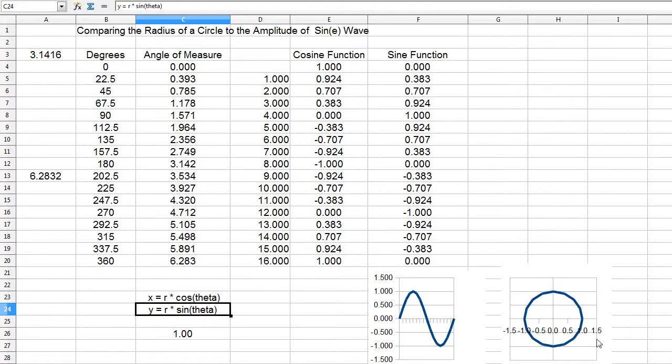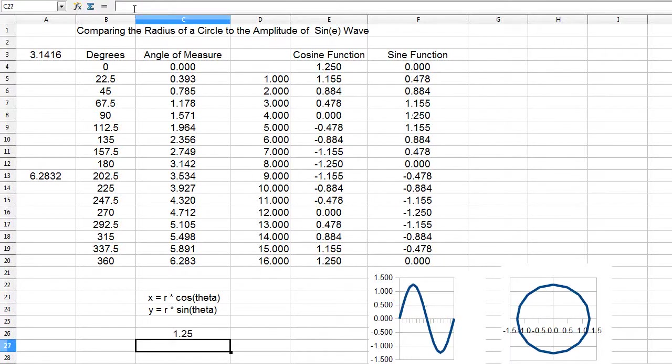But if we were to change the radial distance, in this case let's make it 1.25. Notice a couple things have happened - the r value gets multiplied times the 0.707 that was typically there, and so now it's 0.884.